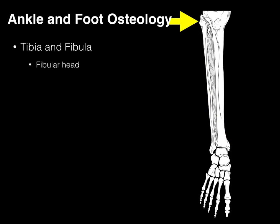The head of the fibula serves as an attachment for the biceps femoris, one of the hamstrings, and is also where the proximal articulation for the tibia and fibula occurs. Just below it is the neck of the fibula, which is important because the common fibular nerve wraps right around this neck of the fibula prior to bifurcating into its superficial and deep branches.